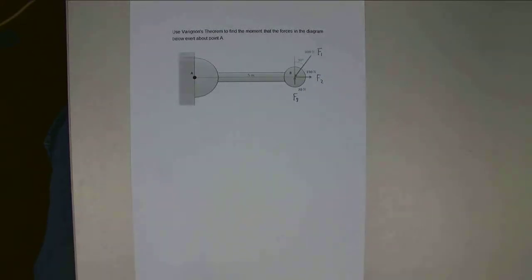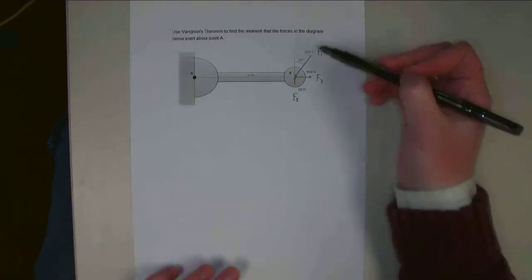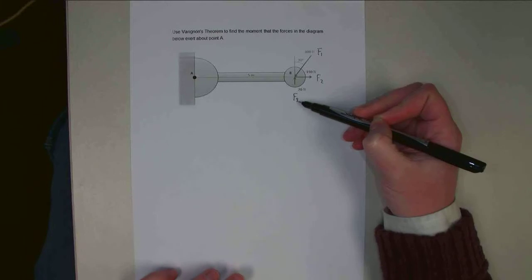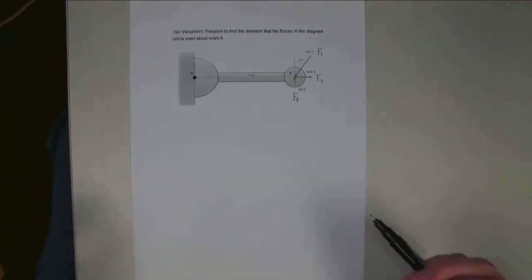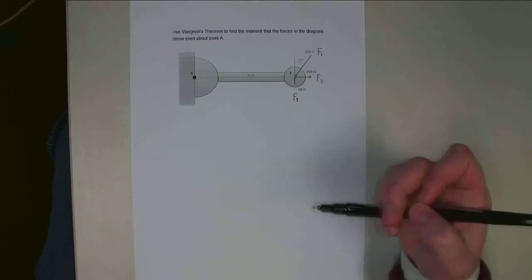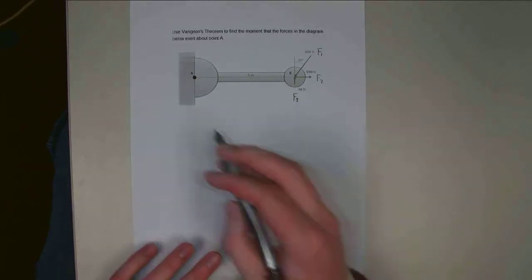So what Varanian's Theorem lets me do, rather than finding the moment from force 1, moment from force 2, moment from force 3, and then adding all those together, I can actually add all these forces together at the beginning and then find the moment that that overall sum of forces exerts about point A.